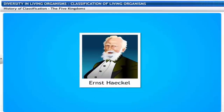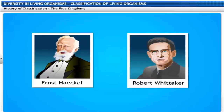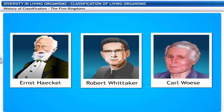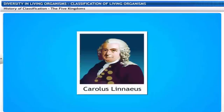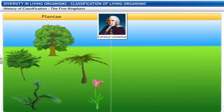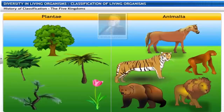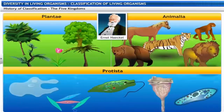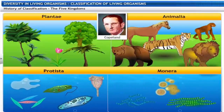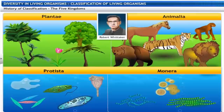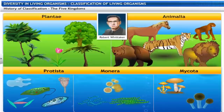Biologists such as Ernst Haeckel, Robert Whittaker and Carl Woese have tried to classify living organisms into broad categories called kingdoms. Carolus Linnaeus classified all living organisms as Plantae and Animalia. Ernst Haeckel proposed Protista to include eukaryotic unicellular organisms. Copeland introduced Monera to include all prokaryotic organisms. In 1969, Whittaker proposed Mycota to include fungi, leading to a five-kingdom classification that is still used today.